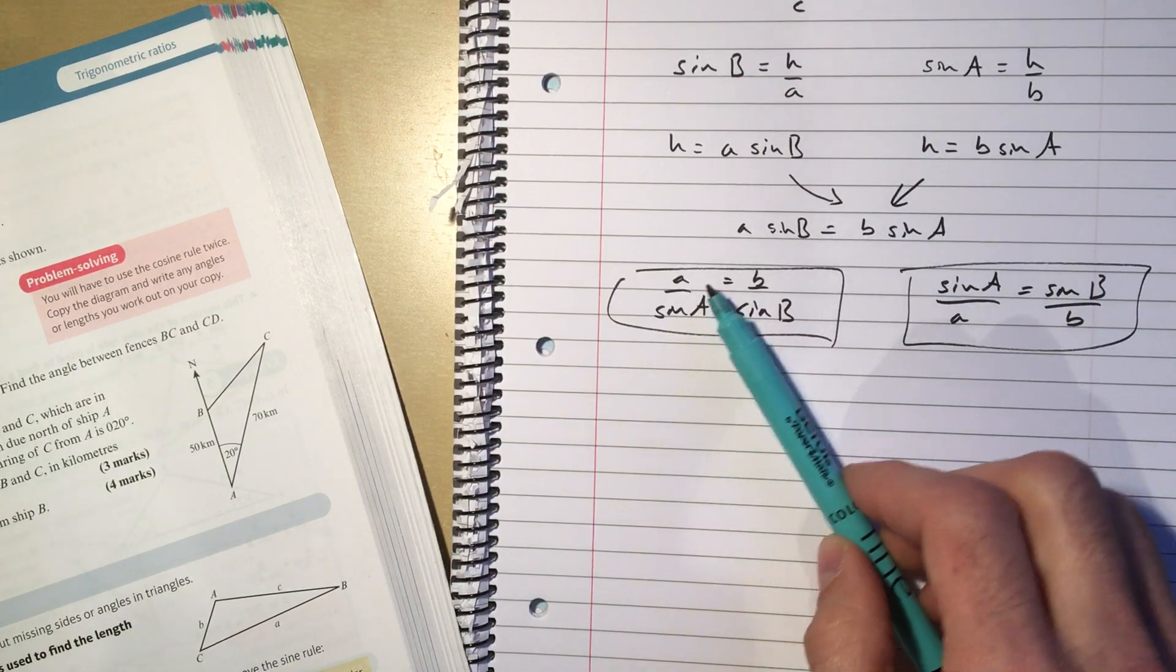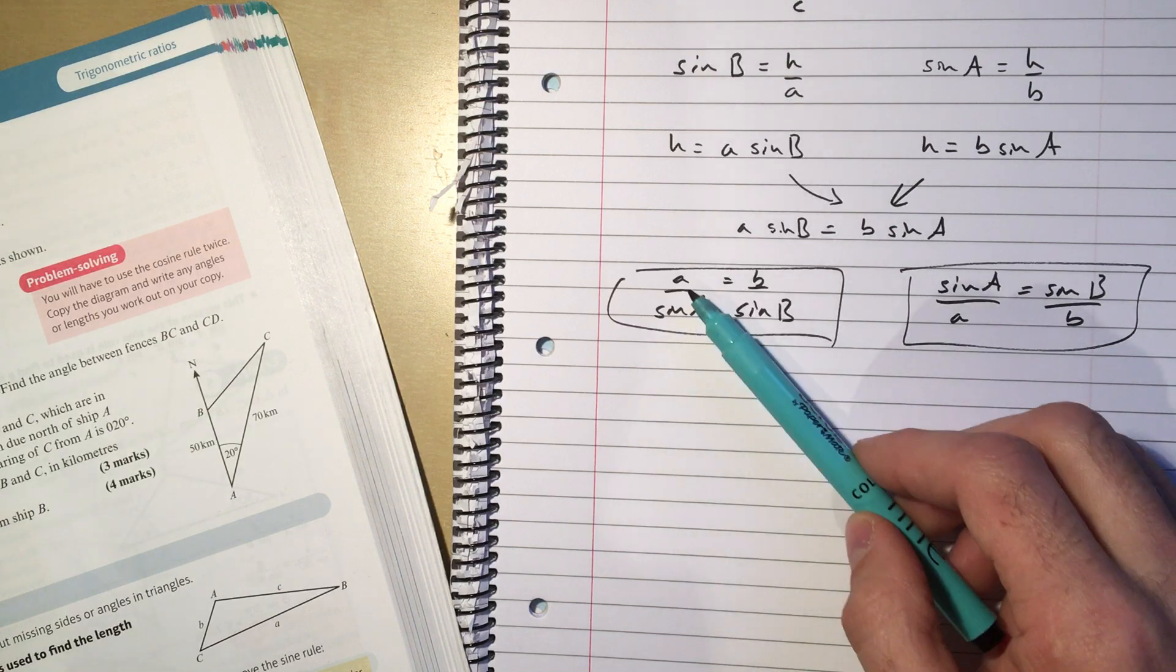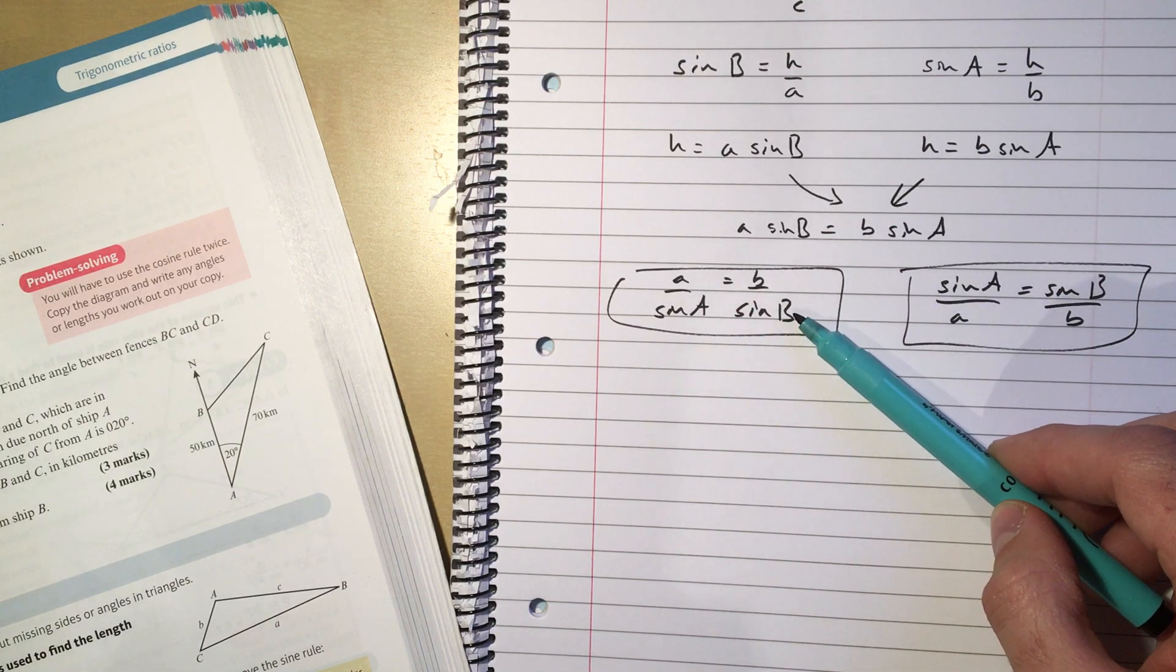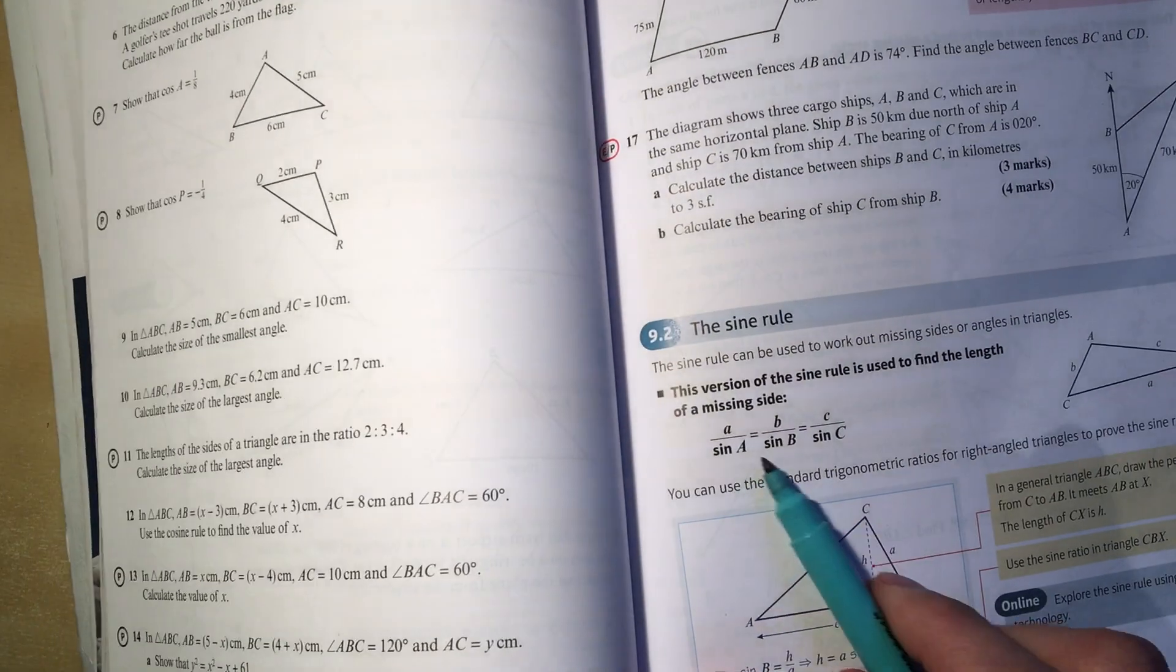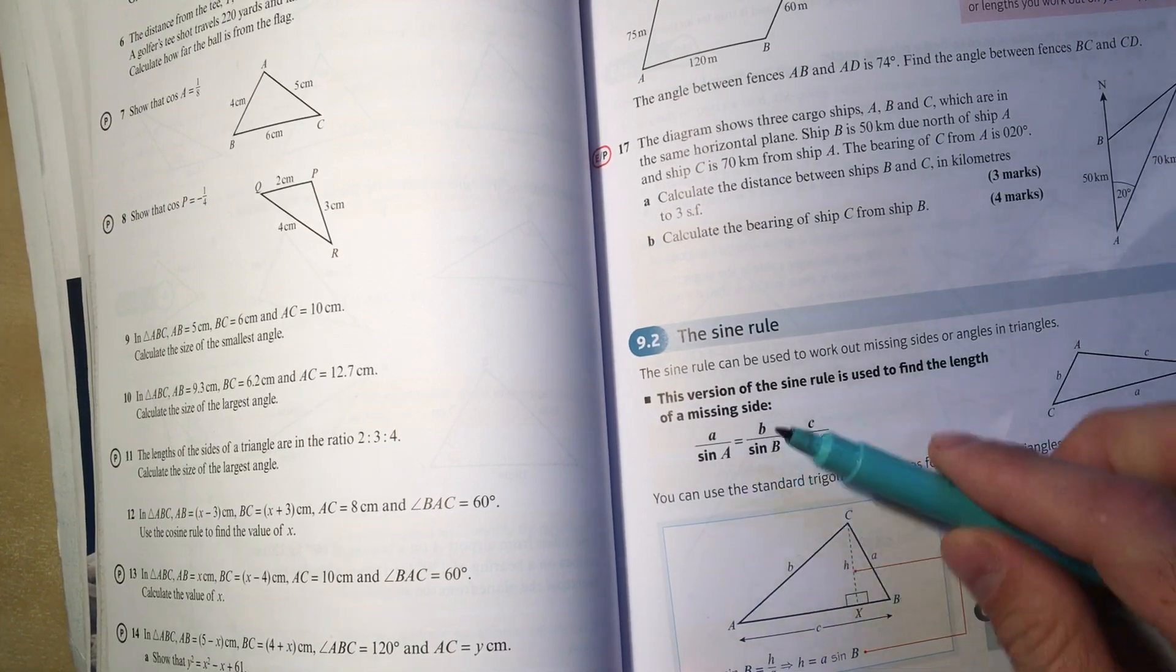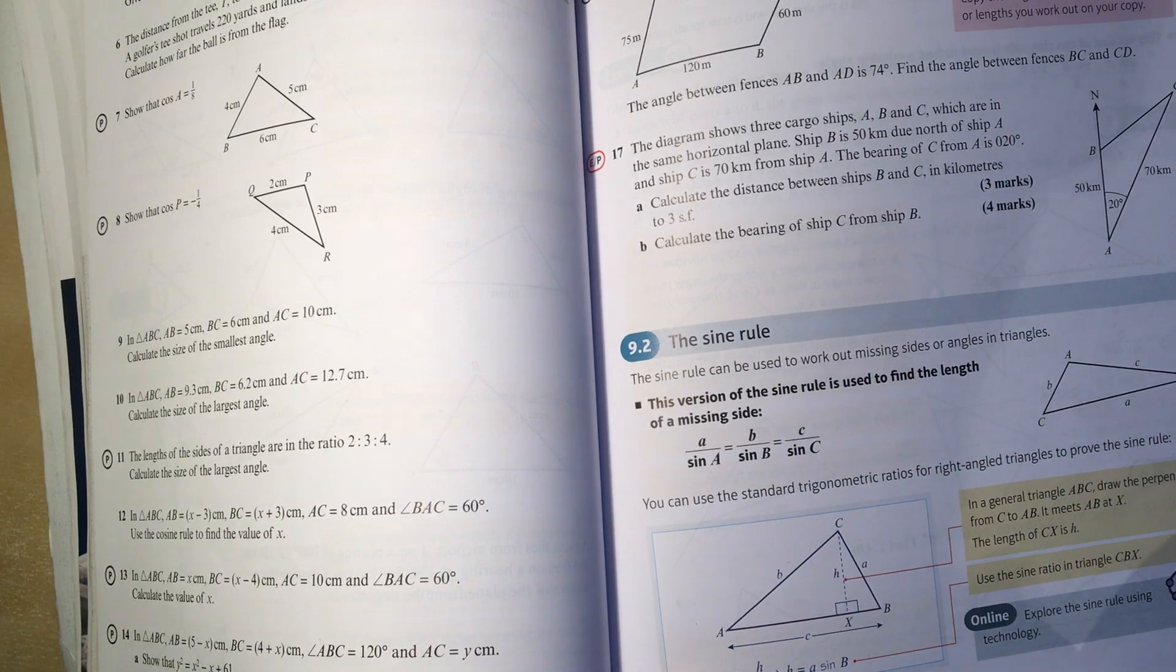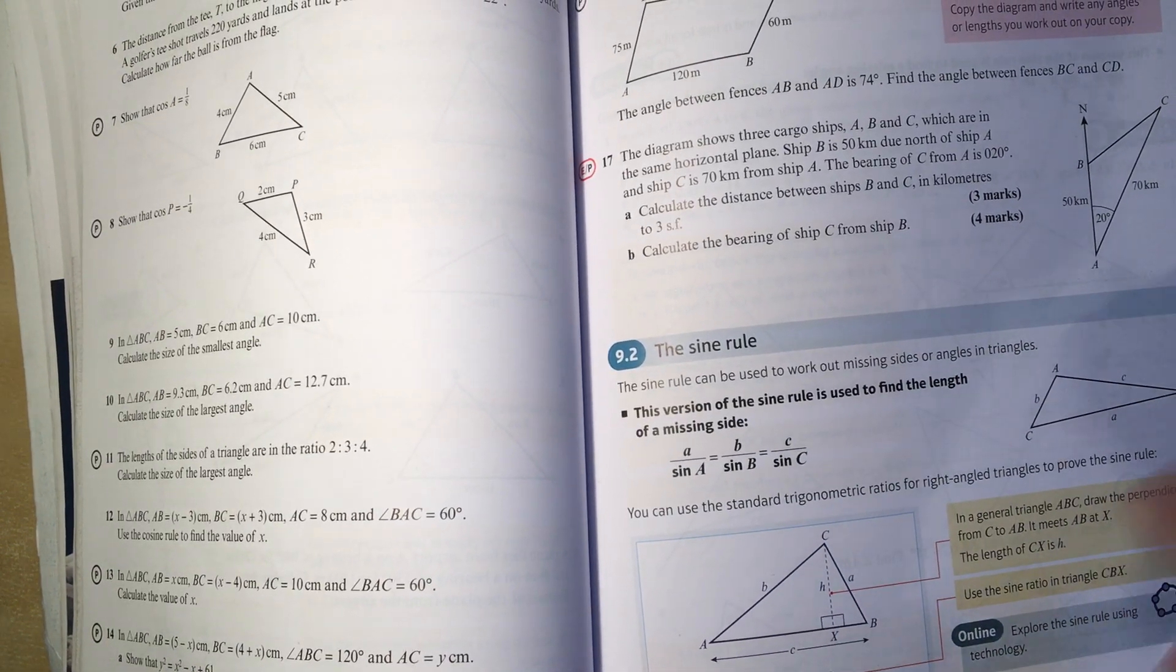And it doesn't matter what's labeled A in the question, what's labeled B in the question - what this is is a side and the angle opposite, a side and the angle opposite. You often see it written as A over sine A equals B over sine B equals C over sine C. Just to emphasize that this pairing of the side divided by the sine of the angle opposite is equal for any sides you can deal with, the A's, the B's or the C's.